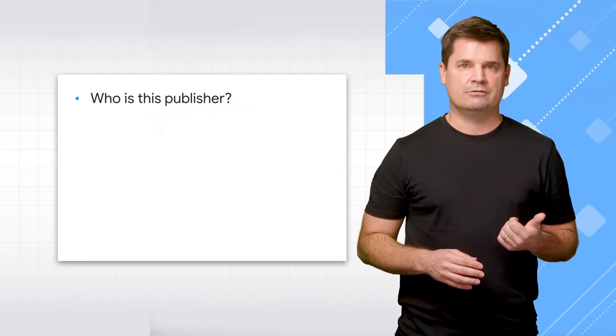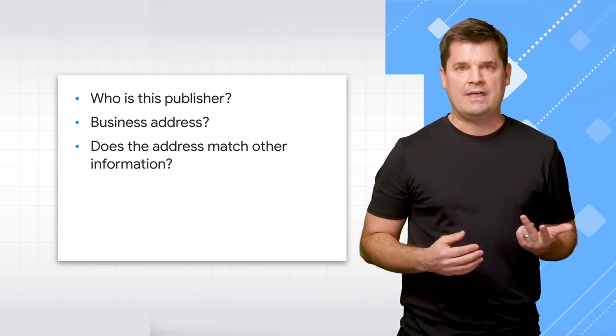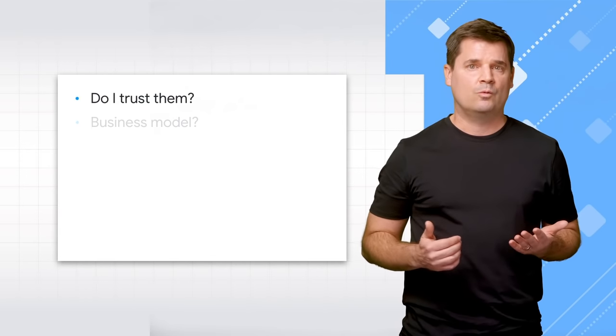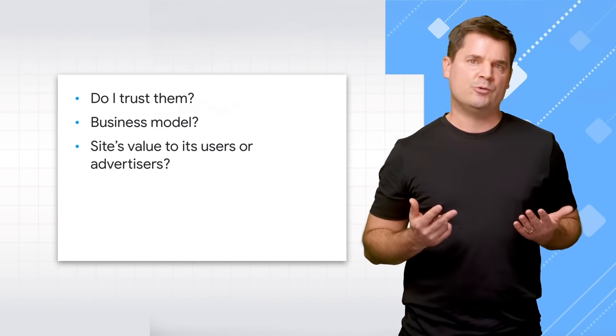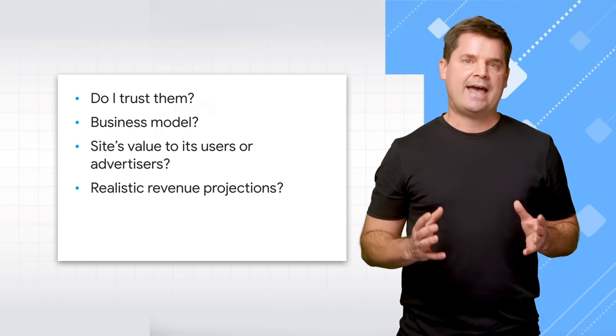What are some best practices you can implement to grow your business in a sustainable and policy-compliant way? First, set up your account correctly. Segment what is your own responsibility versus what is managed by your publisher partners. Vet the publishers you partner with to minimize risk — are you partnering with a real business? Make sure you answer these questions for each and every publisher you onboard: Who is this publisher? Do they have a business address? Does the address match what you know about the publisher, the app or the website, and the WHOIS information? How long have they been working on the app or the website? Who are the people behind the business? Do you trust them? What is your business model? Does the site offer value to its users or advertisers? And what are their traffic projections and are they realistic? If something doesn't add up, you need to investigate.